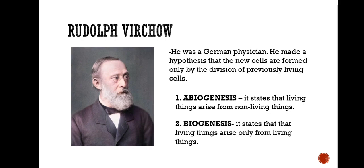At that time there were two ideas about the origin of life. The first one is abiogenesis, which states that living things arise from non-living things — it was the most popular idea of that time. Biogenesis states that living things arise only from living things. Virchow's hypothesis supported the idea of biogenesis and opposed abiogenesis. On the basis of Virchow's hypothesis, a new working definition of cell theory was formed, stating that living things are chemical organizations composed of cells and capable of reproducing themselves.